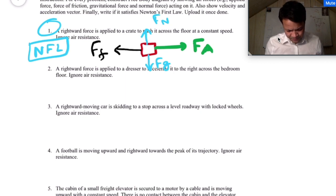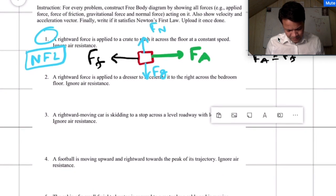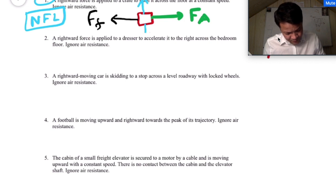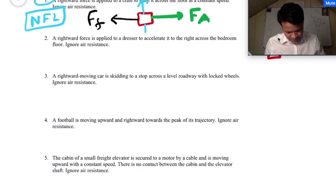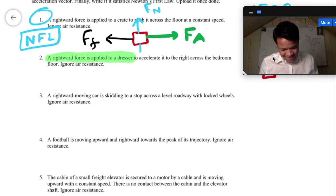Let's move to scenario number two. A rightward force is applied to a dresser — so there is a rightward applied force. To accelerate to the right. So this box is accelerating to the right direction.